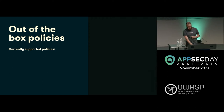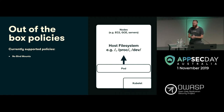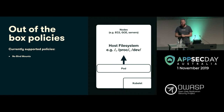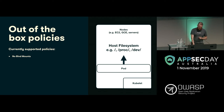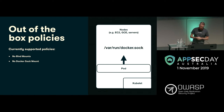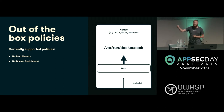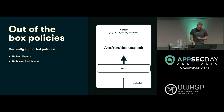Let's walk through some of these policies. Host file system — we demoed that before. That's mounting the file system, and in Linux anything's a file, so that's the ability to look into other process namespaces, other devices, a whole bunch of nastiness. We specifically call out the Docker socket because if you can talk to the Docker socket, create other containers, exec into that, you can privilege escalate that way.